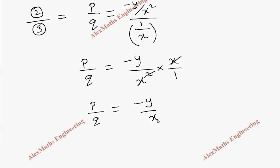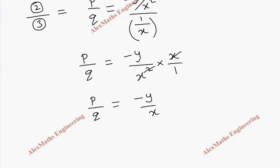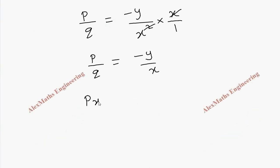Cross multiplying we get px = -qy, and rearranging: xp + yq = 0. This is our required partial differential equation after eliminating the given arbitrary function f.